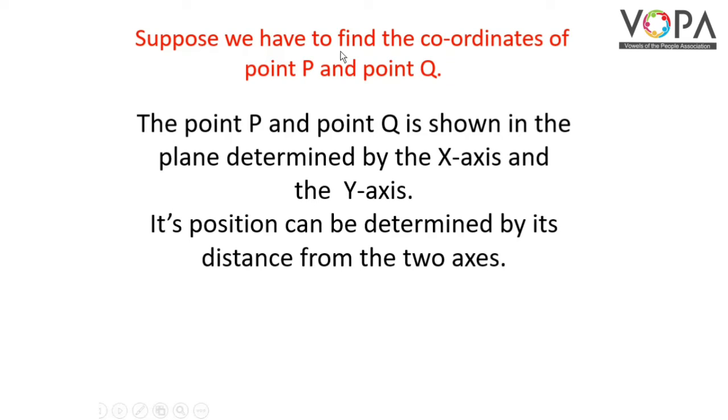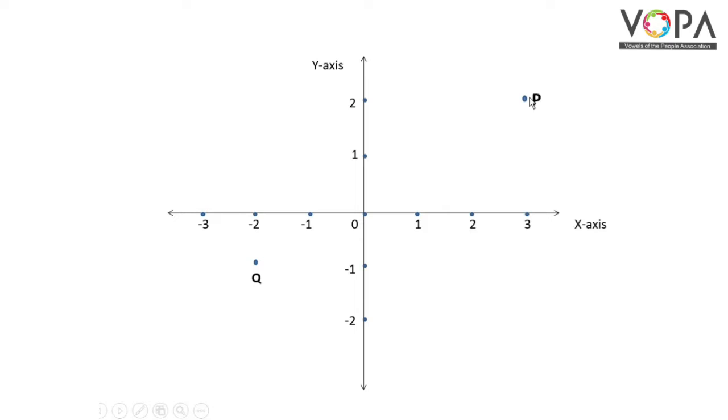Suppose we have to find the coordinates of point P and point Q. The point P and point Q are shown in the plane determined by the X-axis and Y-axis. Here, this is point P and this is point Q.